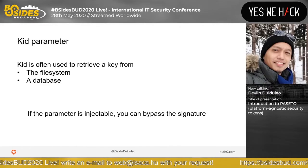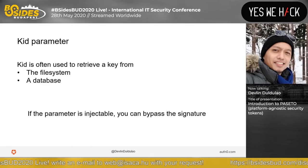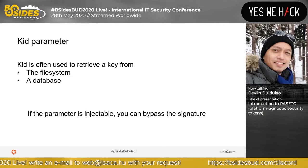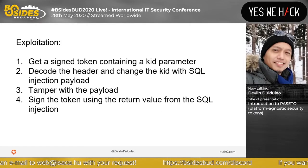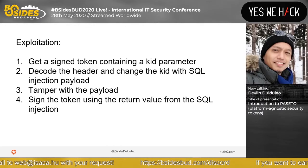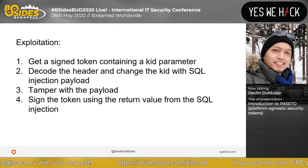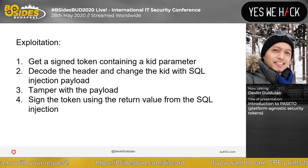The KID parameter is an optional header claim which holds a key identifier — particularly useful when you have multiple keys to sign tokens and you need to look up the right one to verify the signature. This is done prior to verification of the signature. Exploitation: get a signed token containing a KID parameter, decode the header and change the KID with an SQL injection payload, tamper with the payload, then sign the token using the return value from the SQL injection.